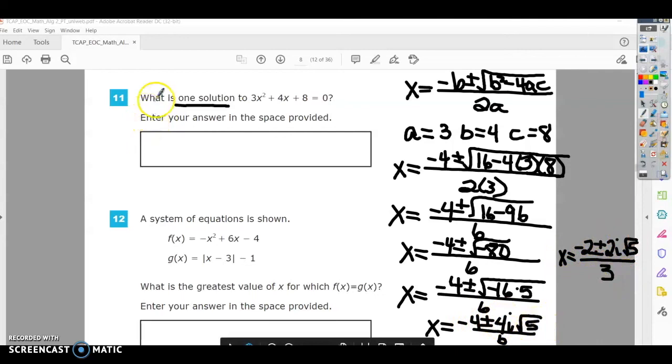All right, it says, what is one solution? All right, so the plus minus here makes it two solutions. So you can put negative 2 plus 2i square root of 5 over 3